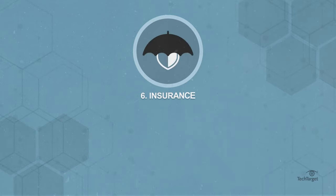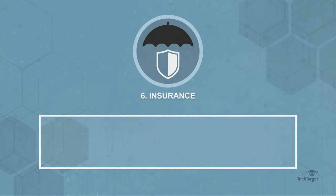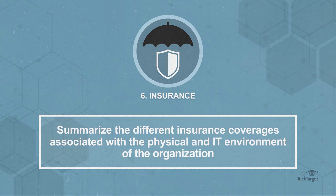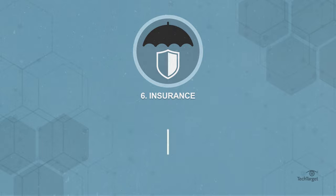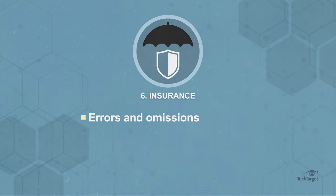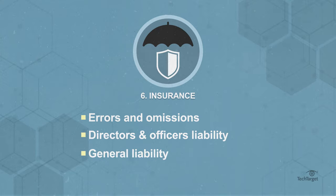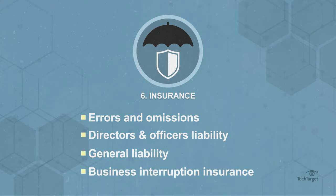Six: insurance. In this step, summarize the different insurance coverages associated with the physical and IT environment of the organization. These include errors and omissions, directors and officers liability, general liability and business interruption insurance.